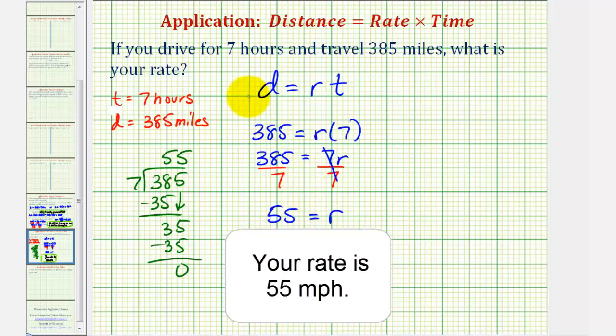Now I do want to point out that what we could have done is taken the equation D equals R times T, solved it for R, and then performed the substitution. For example, if we started with this equation here, distance equals rate times time, and solved it for R, we would divide both sides by T.